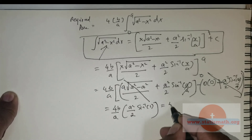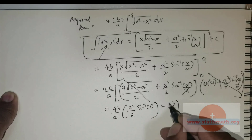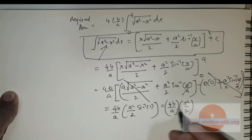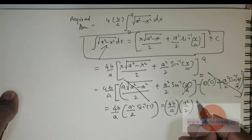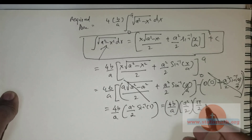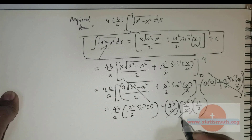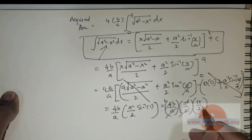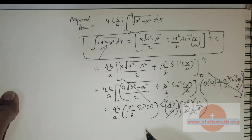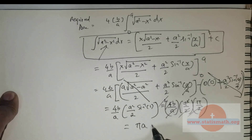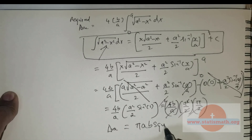So I rewrite this as 4b divided by a times a squared divided by 2 times sine inverse of 1, which equals pi over 2. So a and a cancel, 2 cancels with 4 giving 2, and 2 and 2 cancel, giving the final area as pi times a times b square units.